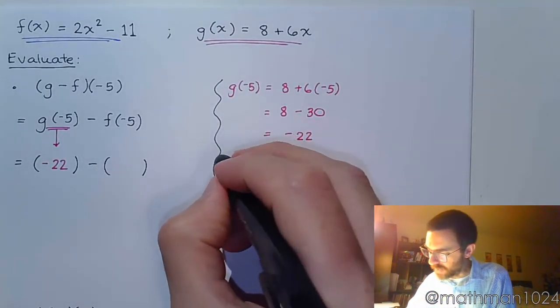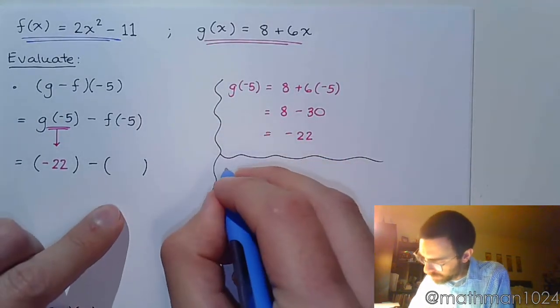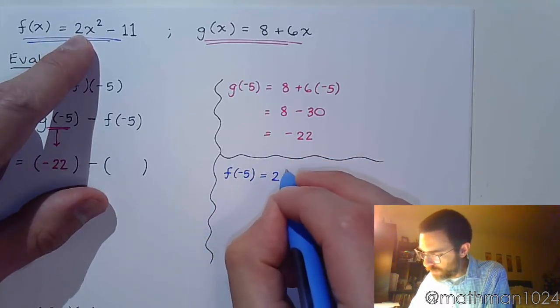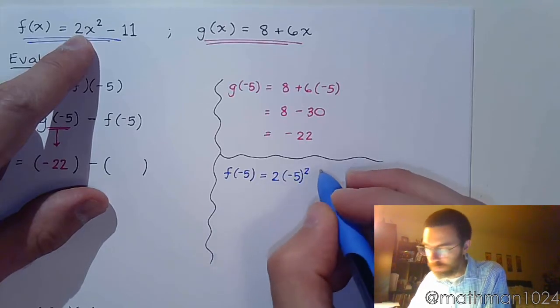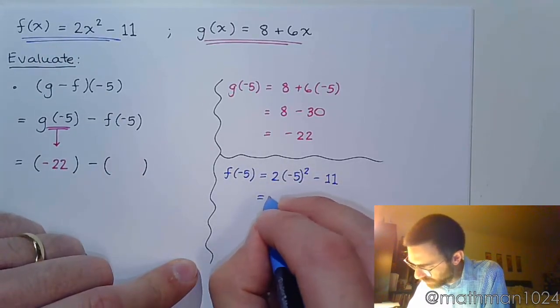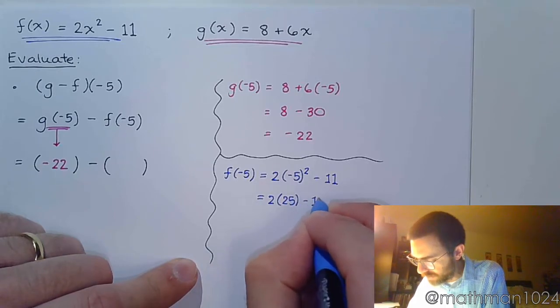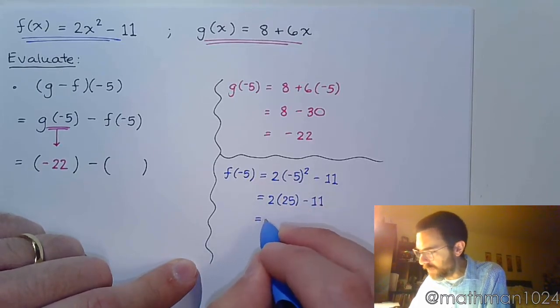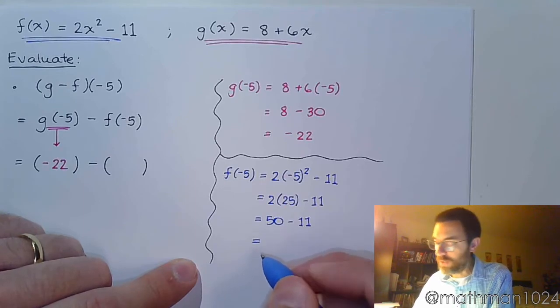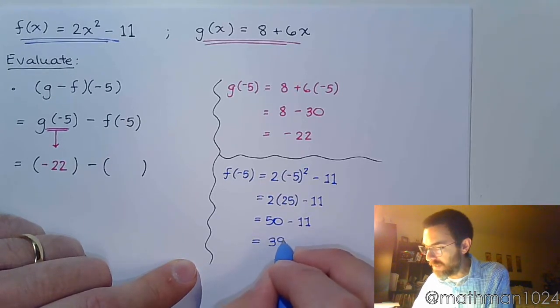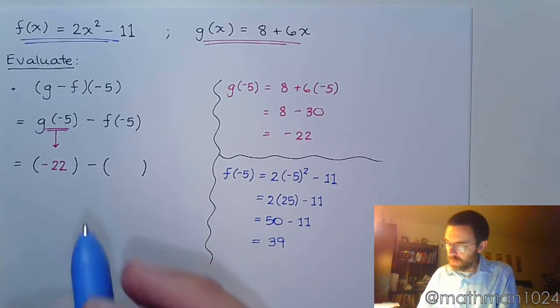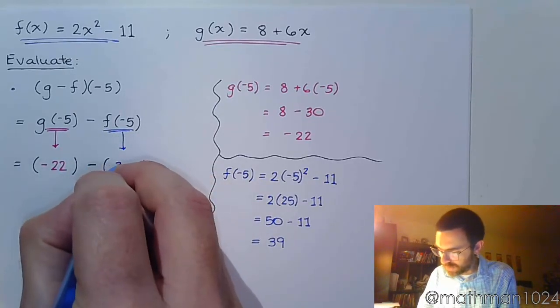And then we come off to the side again, and we figure out f of negative 5. So f of negative 5, we're going to use this guy. So that's 2, parentheses, negative 5 squared, minus 11. So negative 5 squared is positive 25. And we just work this out. Multiplication comes next. 50 minus 11. Please make sure that you can subtract correctly. 50 minus 11 is 39. Not other numbers that I might have seen in the past.